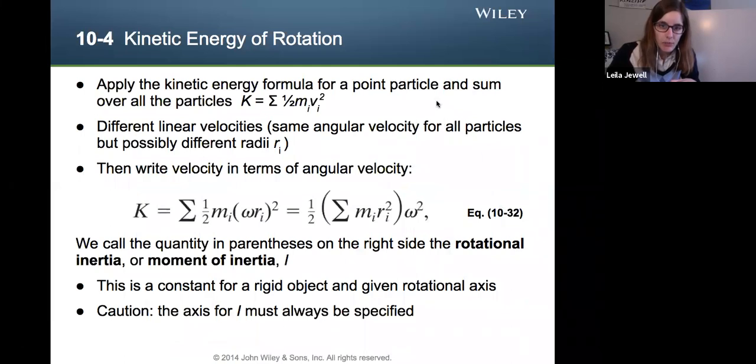And so as we apply it, these first two points are the same. We can then write the velocity instead of v, the linear velocity, we could write in terms of angular velocity, angular velocity times the radius, where the radius is different, but the angular velocity is in fact the same. That means the angular velocity isn't part of the summation, neither is the 1/2. So we have 1/2 parentheses the summation of all the mass elements times their radius squared, and then the quantity of that times the angular velocity squared.